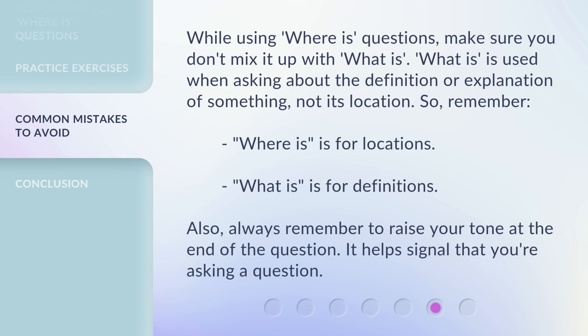While using 'Where is' questions, make sure you don't mix it up with 'What is.' 'What is' is used when asking about the definition or explanation of something, not its location. So remember: 'Where is' is for locations. 'What is' is for definitions. Also, always remember to raise your tone at the end of the question — it helps signal that you're asking a question.